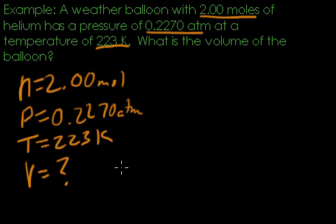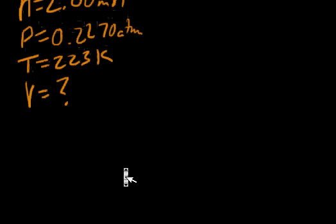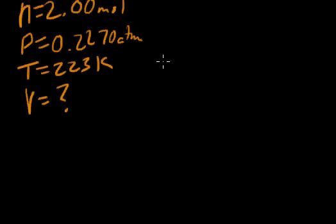The ideal gas law is the only gas law that involves all four of these variables. So I'm going to write that down. The ideal gas law: PV equals nRT. So that's our equation, the E in GUESS.